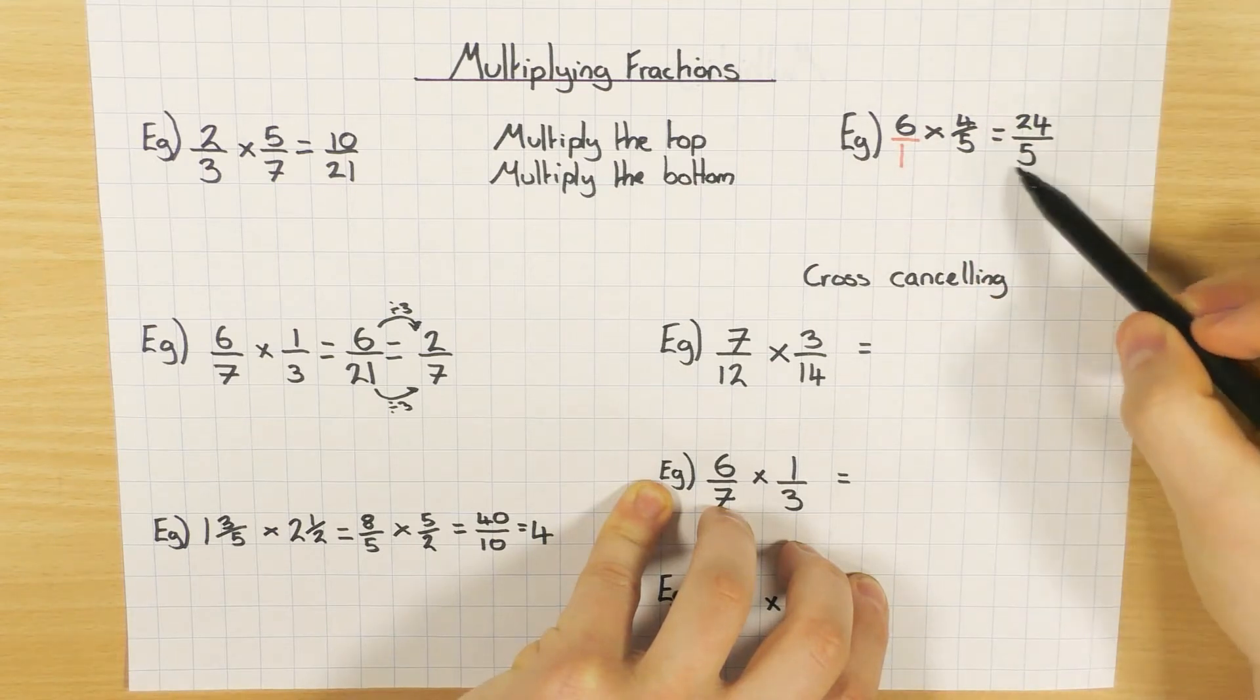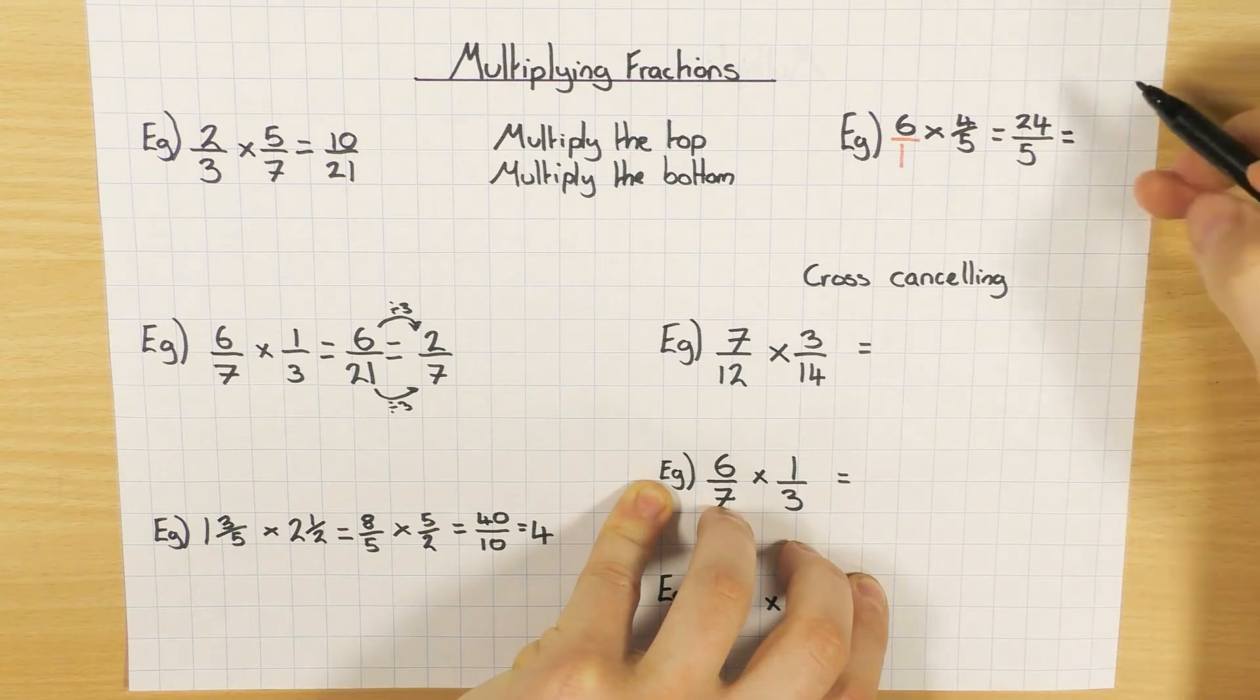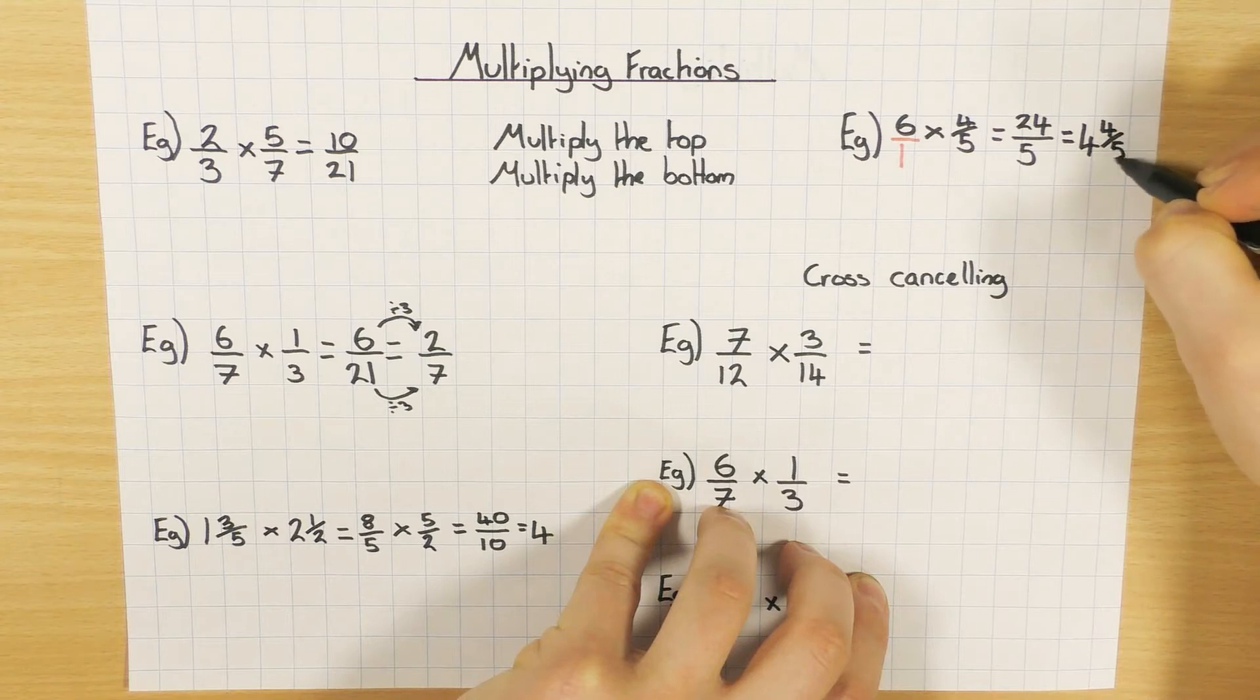Now, if you get a top-heavy fraction as an answer, again, try and simplify it, but also put it back into a mixed fraction. So how many times does 5 go into 24? Well, it goes in 4 times. What's left over? 4. And don't forget, the denominator stays the same. I'll say that again. So 5 goes into 24 4 times, with 4 left over, the denominator stays the same as 5.